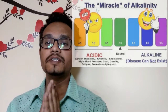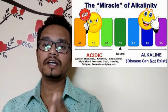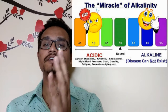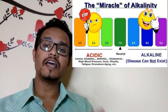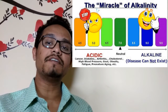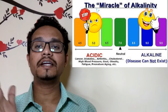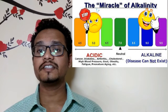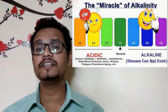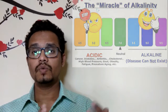When we get neutral water, it has a pH of 7. Anything with a pH greater than 7 is considered alkaline, and anything with a pH lower than 7 is considered acidic.